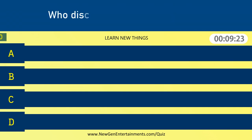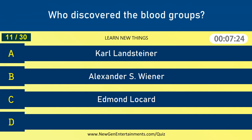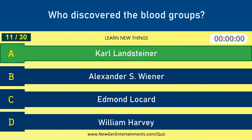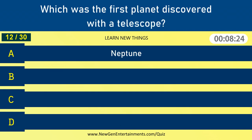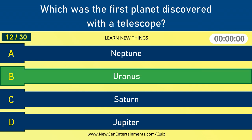Who discovered the blood groups? Karl Landsteiner. Which was the first planet discovered with the telescope? Uranus.